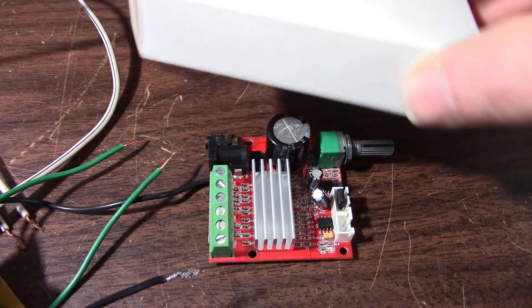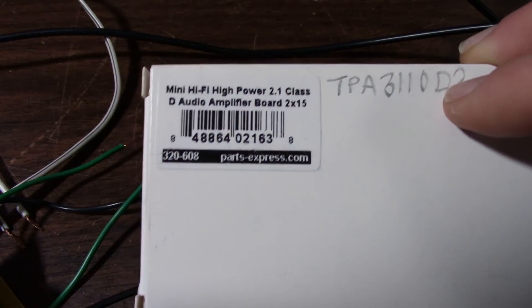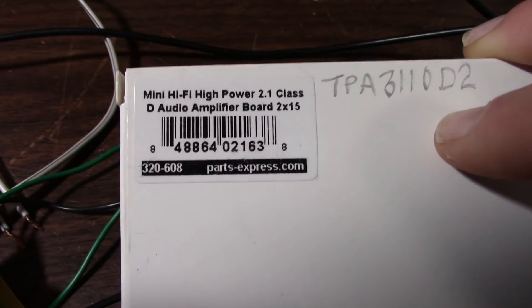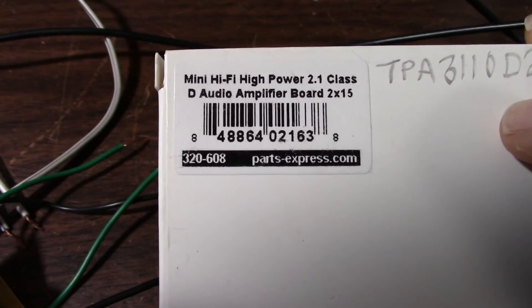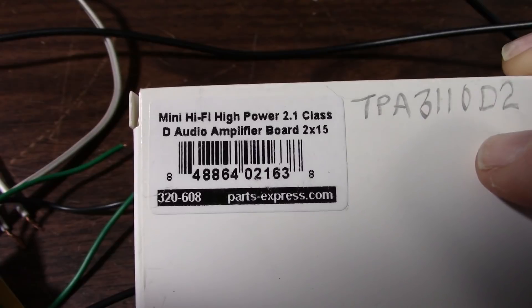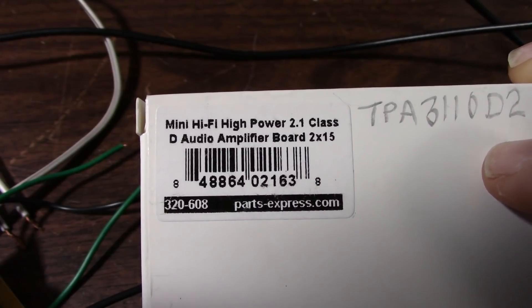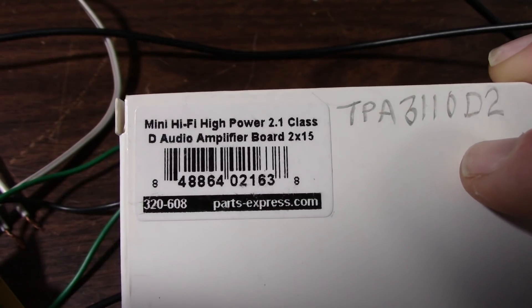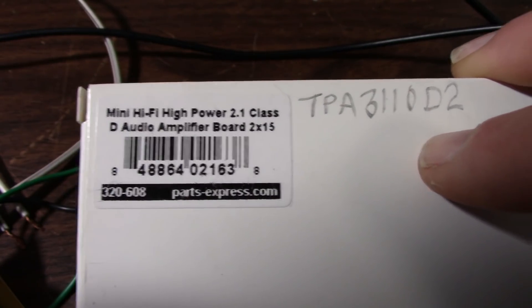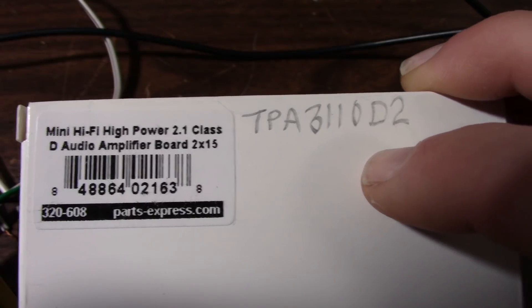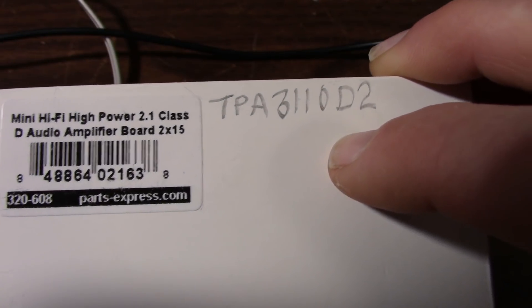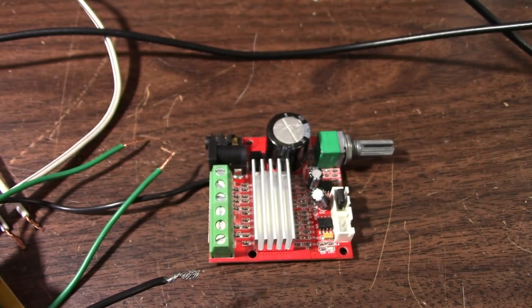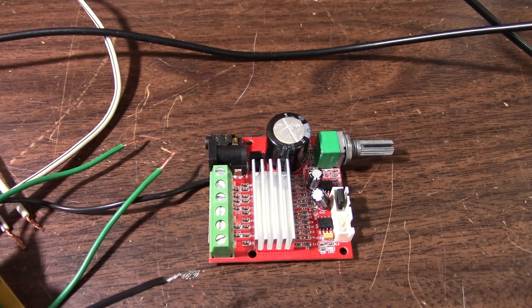This came from Parts Express for $13, you can probably find it cheaper elsewhere. Mini hi-fi high power 2.1 class D audio amplifier board, 2 by 15 watts stereo channels, and it also has a subwoofer channel 1 by 30 watts at 8 ohms.